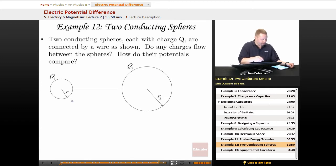That means if we look over here at Q1, V1 equals KQ1 over R1. Over here on the right-hand side, V2 equals KQ2 over R2. And because the potentials must be equal then, we could say that KQ1 over R1 must equal KQ2 over R2.